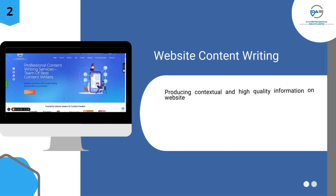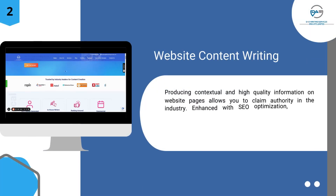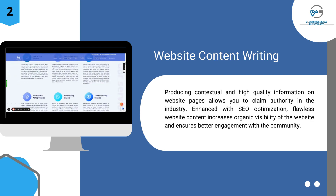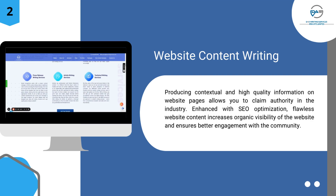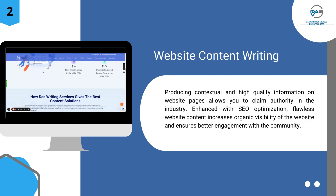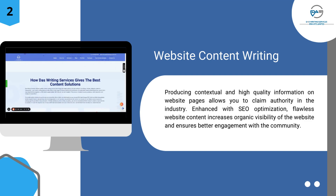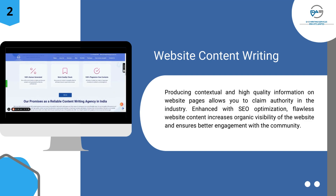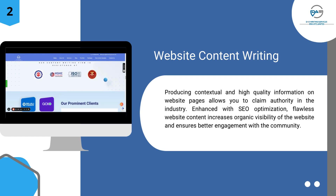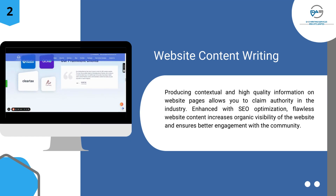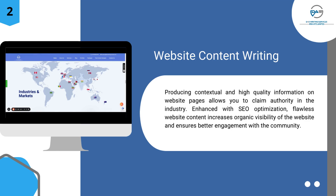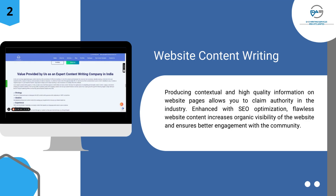Number two: website content writing. Producing contextual and high-quality information on website pages allows you to claim authority in the industry. Enhanced with SEO optimization, flawless website content increases organic visibility of the website and ensures better engagement with the community.